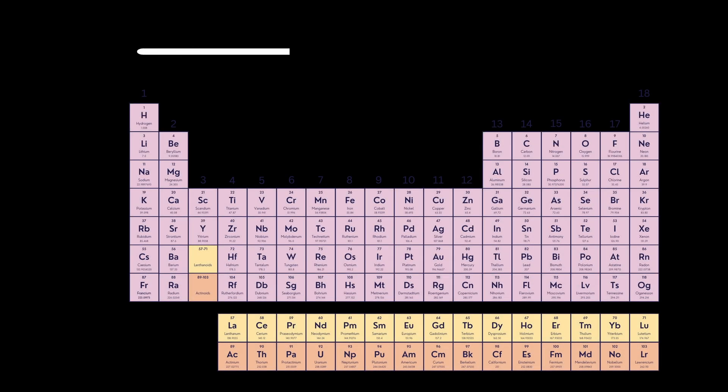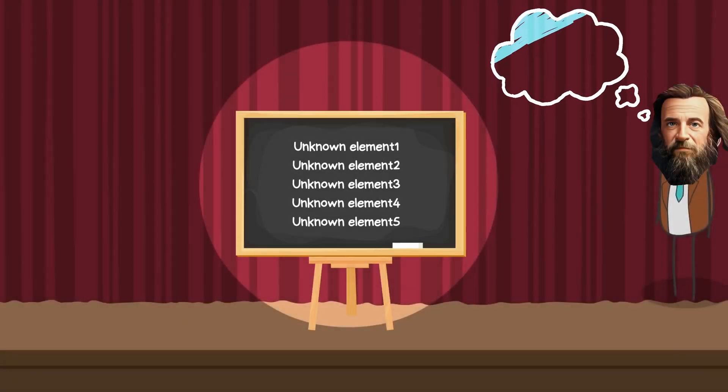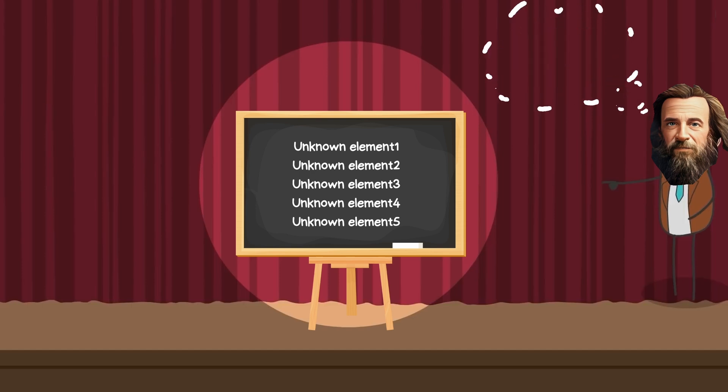Mendelev arranged the elements both in terms of their atomic weights and their valence. He also left space for new elements that he thought would be discovered. He also predicted the properties of five unknown elements and what their compounds would be, even before their discovery, based on the principles of the periodic table he had arranged.